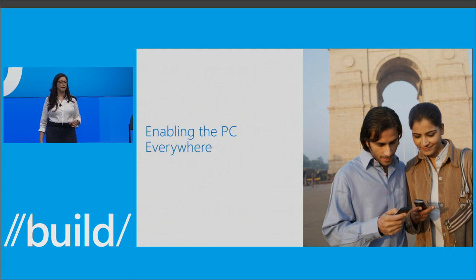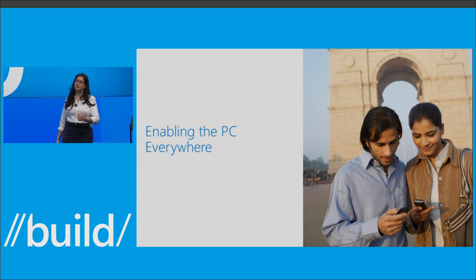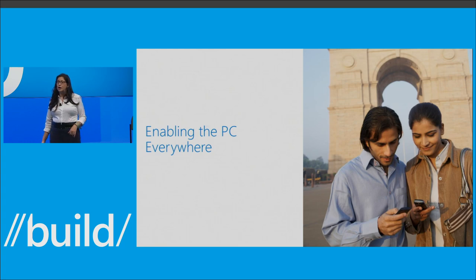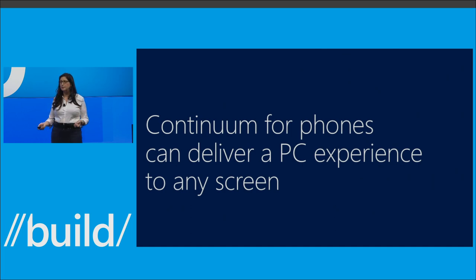In emerging markets like China and India, the smartphone is the first and only computing device for many people. If you're a student with just one computing device, it will be a phone — and likely you also have a TV. So you can imagine taking your Windows phone, connecting it to your existing television, adding a keyboard and mouse, and having a PC experience, maybe for the first time. We know from our research that this is really a game changer — very impactful when we brought these scenarios to those markets.